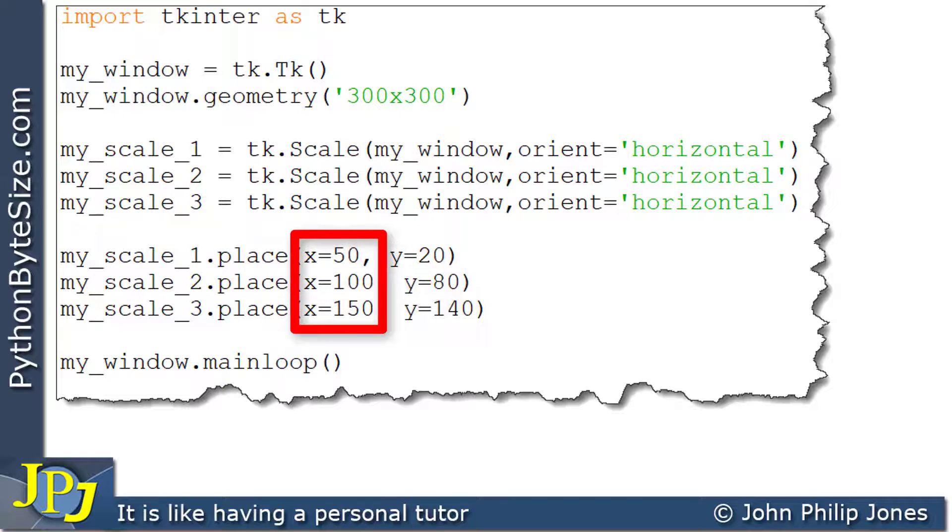If we look at the x values, we can see we're going in the x direction starting at position 50, then we move over for the next widget to position 100, and then we move over to see that this one is 150. And here we can see that y is 20, 80, 140, meaning that each of the widgets will be further down the y-axis.